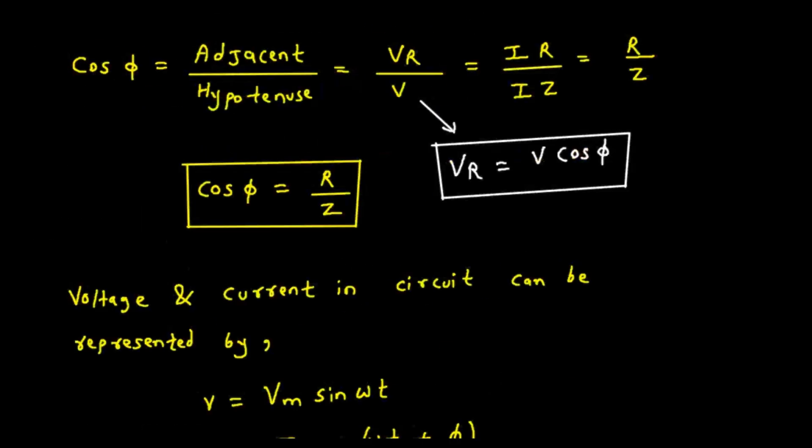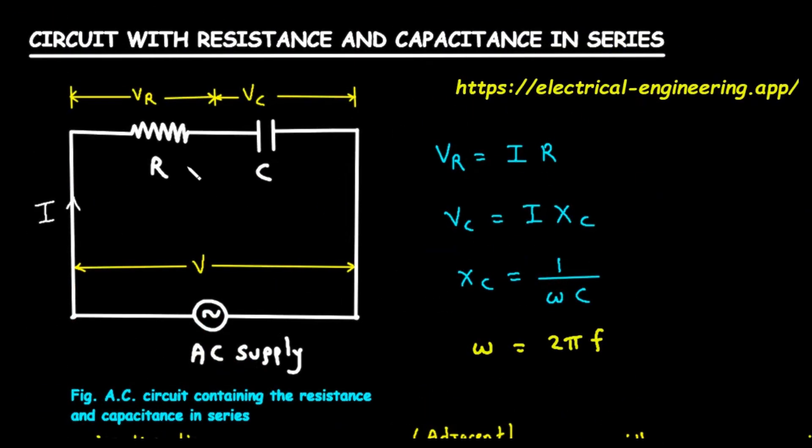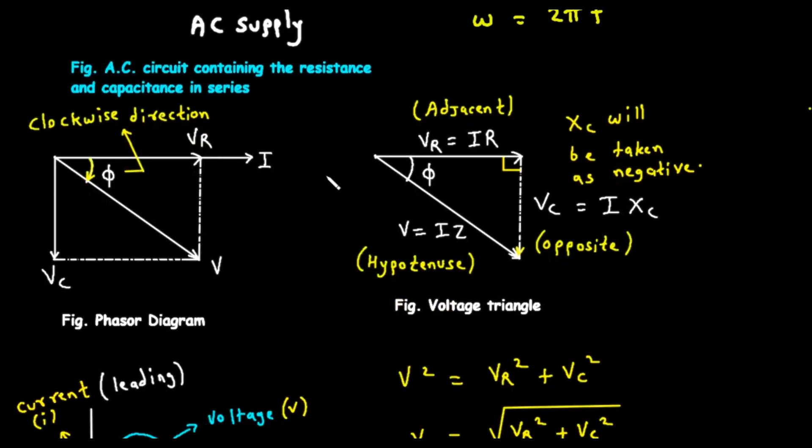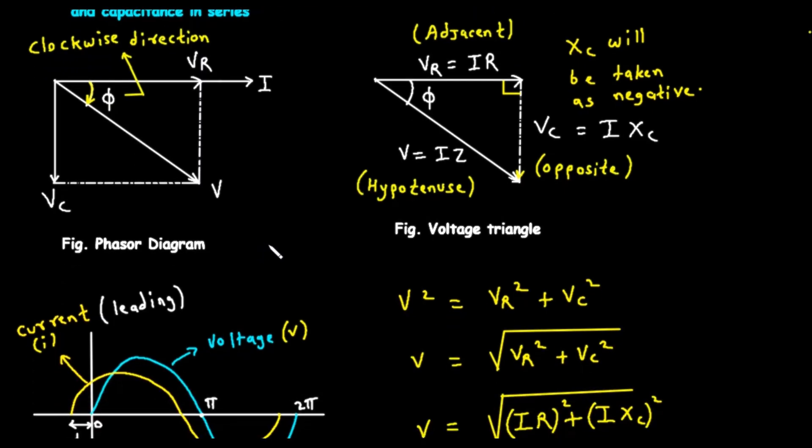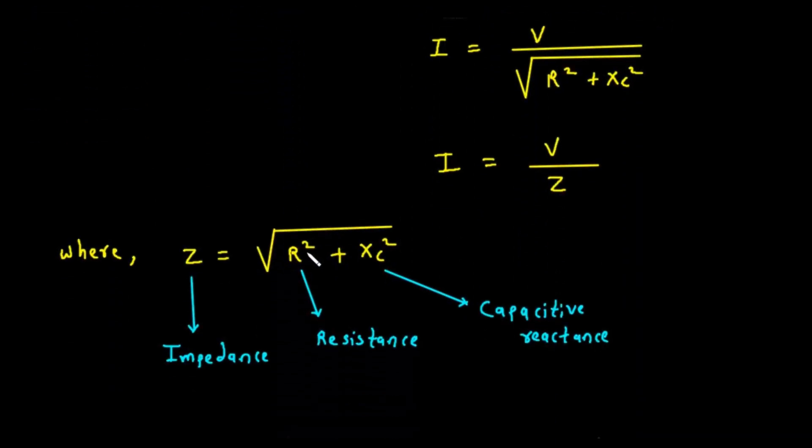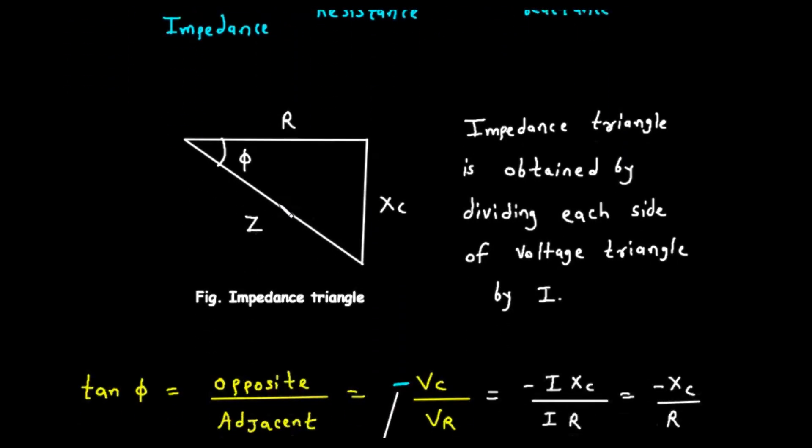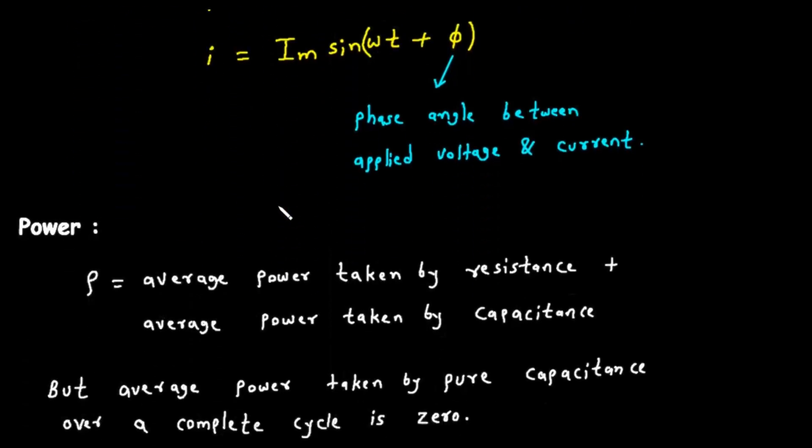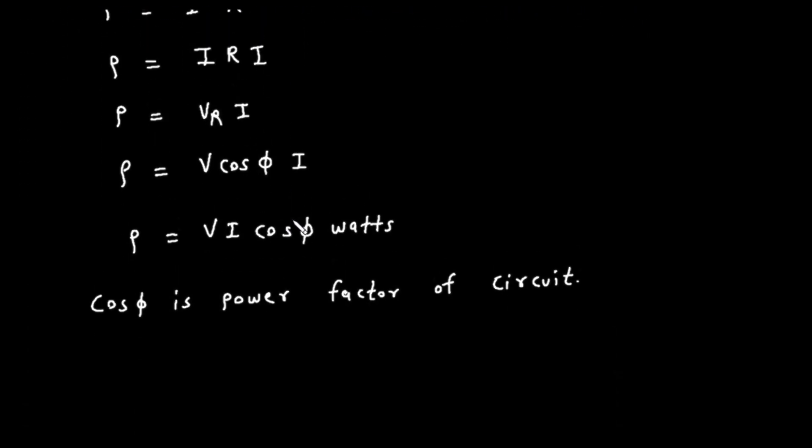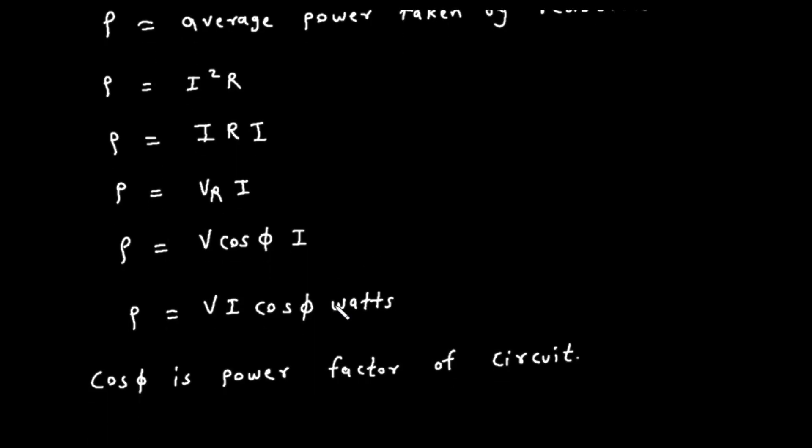So to recap, in a series RC circuit, the current is constant throughout. The resistor's voltage is in phase with the current, while the capacitor's voltage lags the current by 90 degrees. Their vector sum gives the total voltage. The total opposition to current is called impedance Z. Because of the capacitor, the total circuit current leads the total voltage by a phase angle phi. And finally, all the real power is consumed by the resistor, and it can be calculated as v times i times the power factor, which is the cosine of the phase angle.